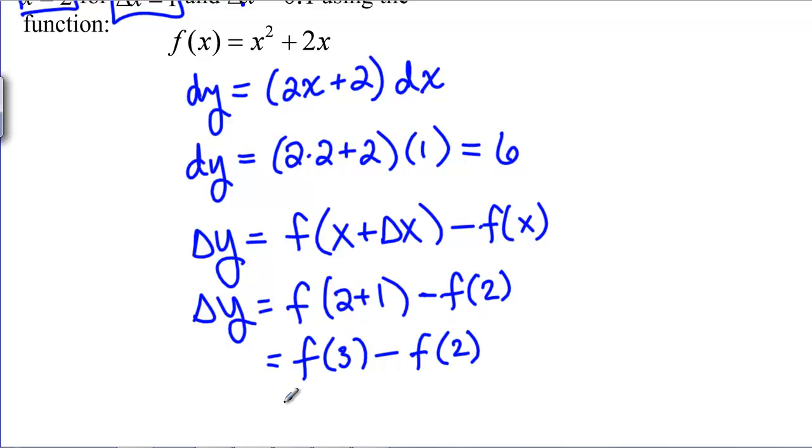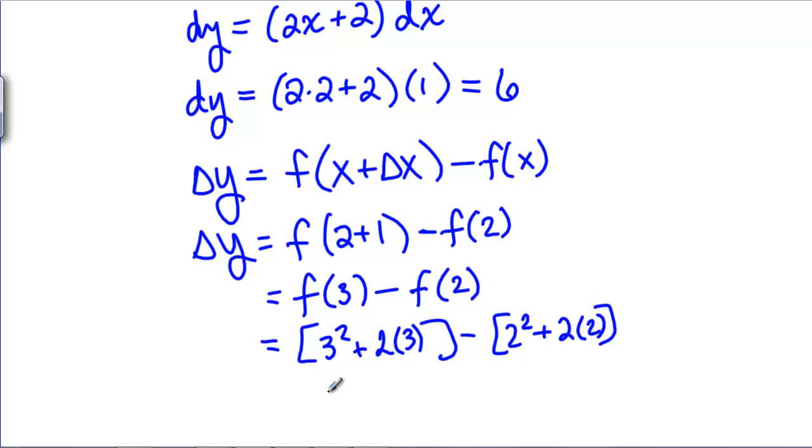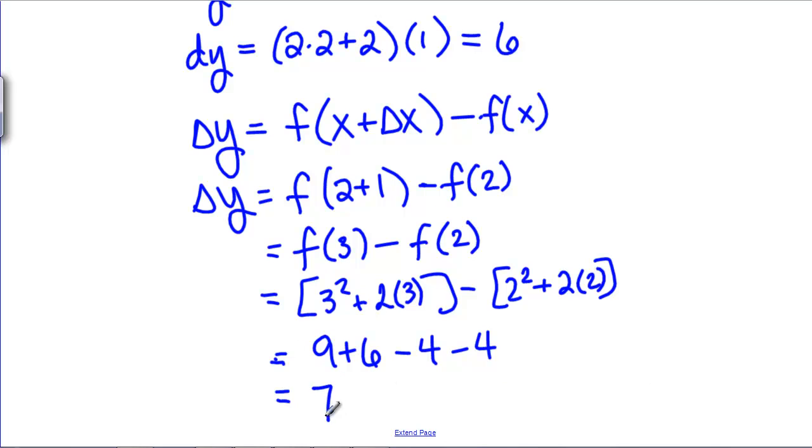Now, we can actually calculate those values so we're looking at 3 squared plus 2 times 3 minus 2 squared plus 2 times 2. Calculating those we get 9 plus 6 minus 4 minus 4 which is 7. So, we estimated that the change would be 6, that was our dy and the actual change was 7. So we're not that far off.